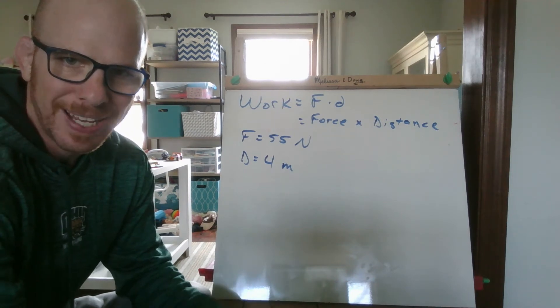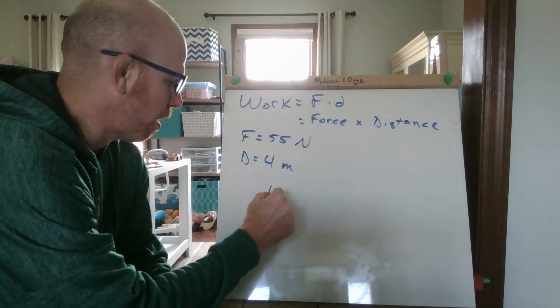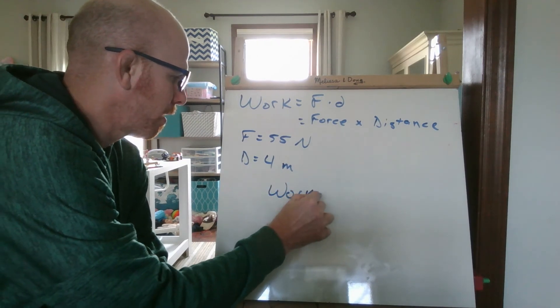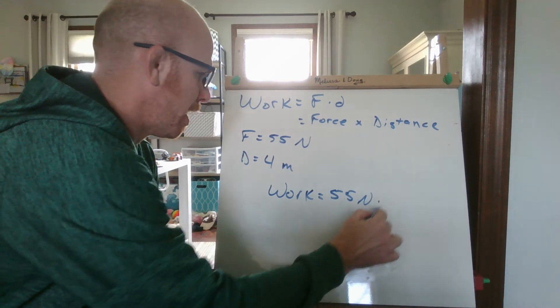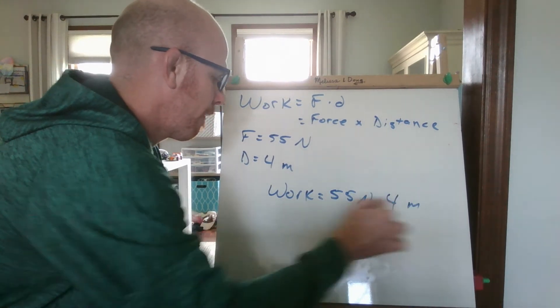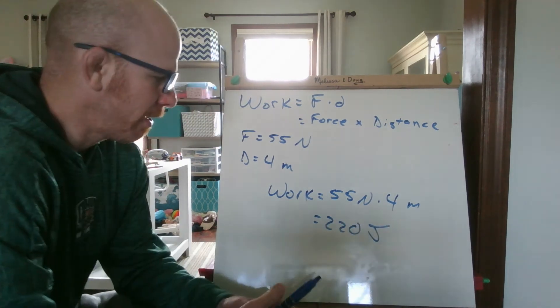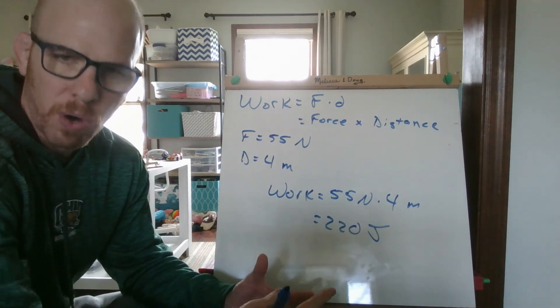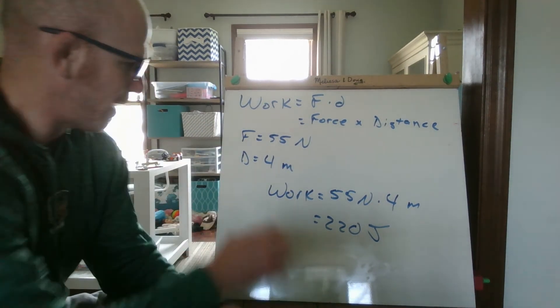I just take the force number and the distance number and plug them into my equation. Work equals 55 newtons times 4 meters. That's going to give me 220 joules. So 220 joules worth of work, or that amount of work was put into pushing that crate that distance.